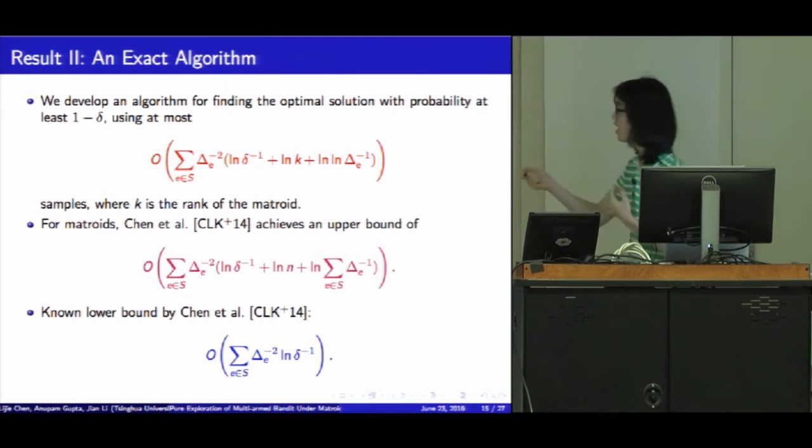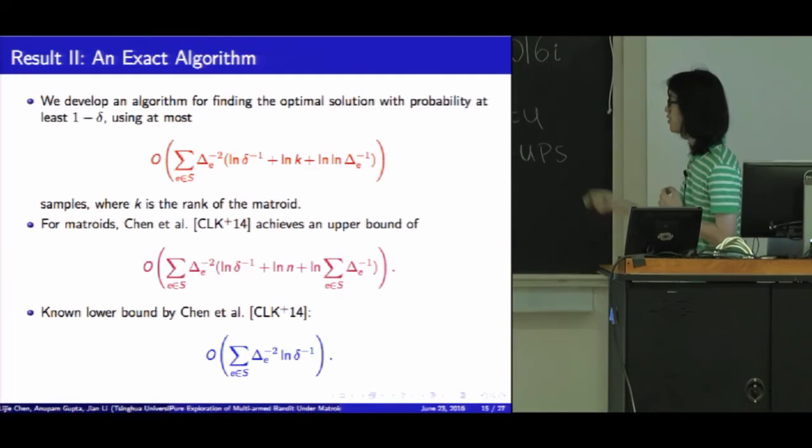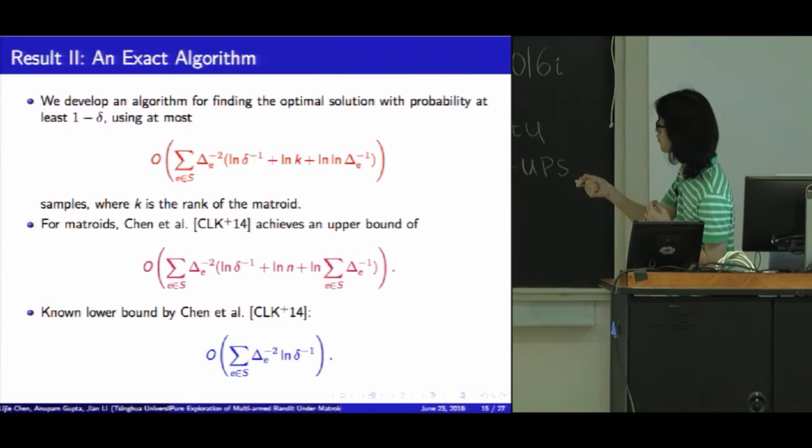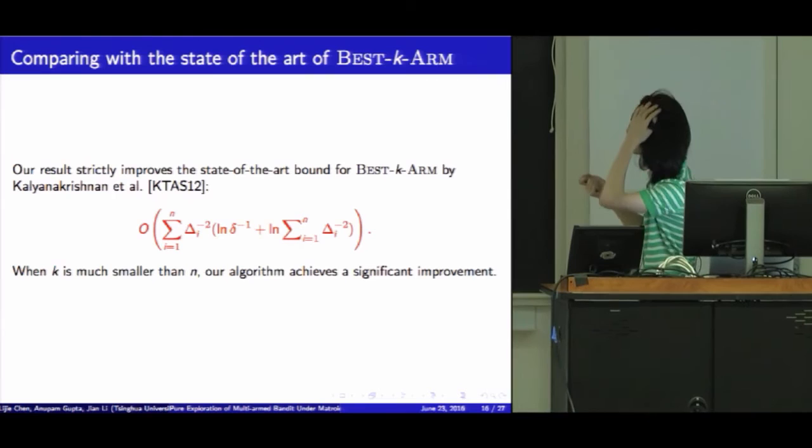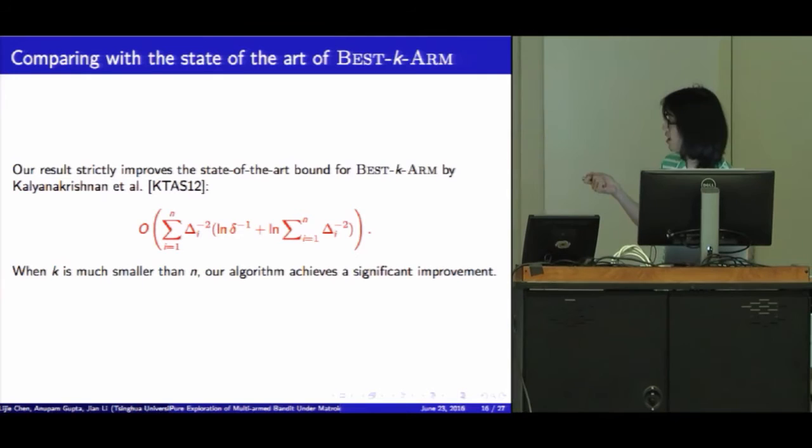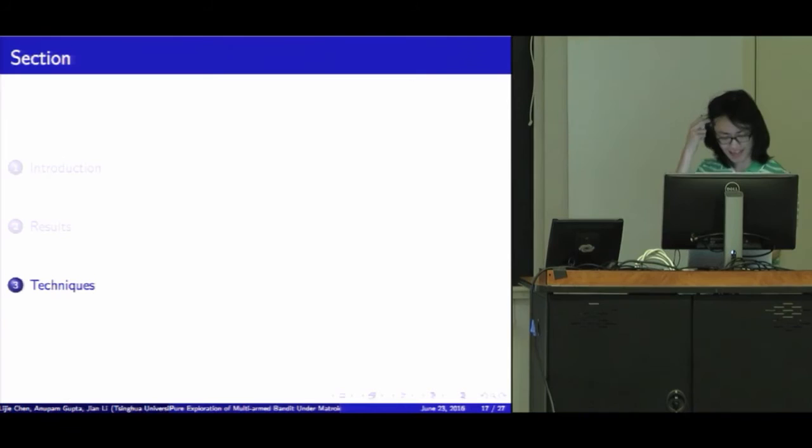For comparison, Chen et al.'s work achieved this upper bound for matroid. We can see that we improve the dependence from log n to log k, and this from one log to two logs. And that's the lower bound here. All results strictly improve the state-of-the-art bound for best k-arms. When k is very small, our algorithm achieves a significant improvement.